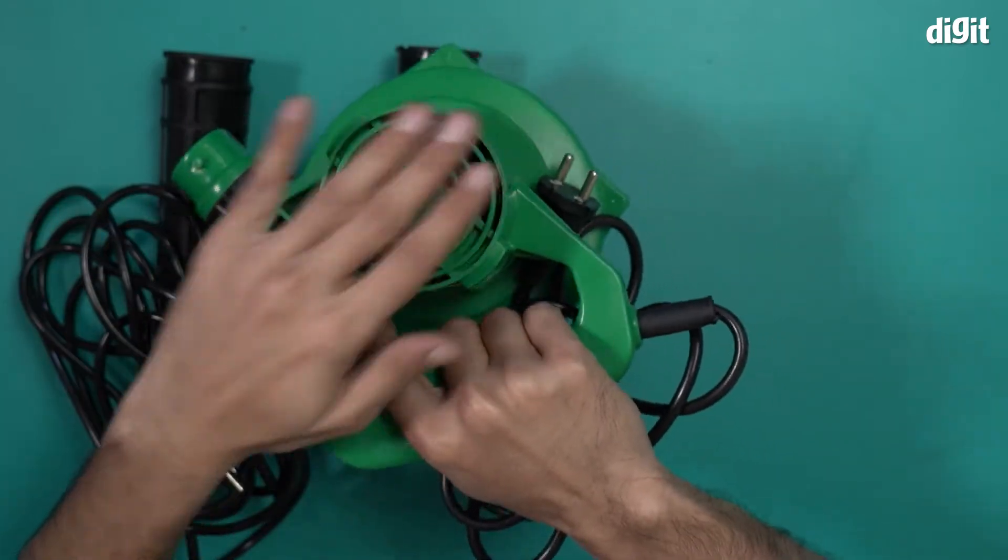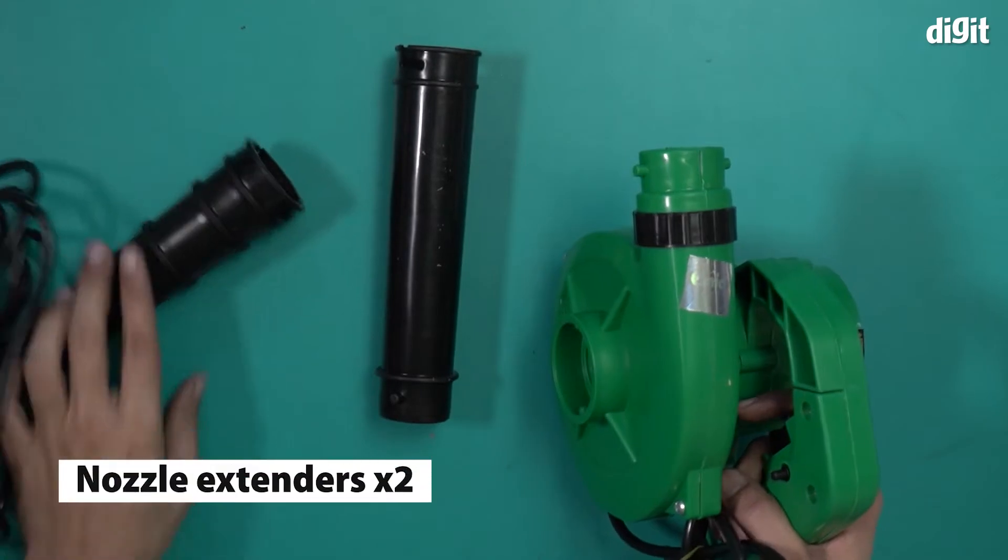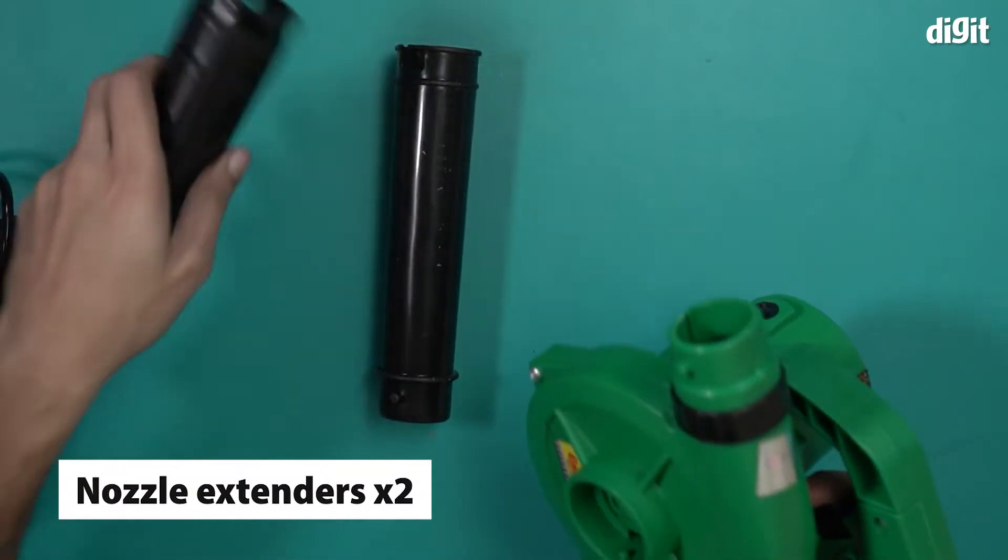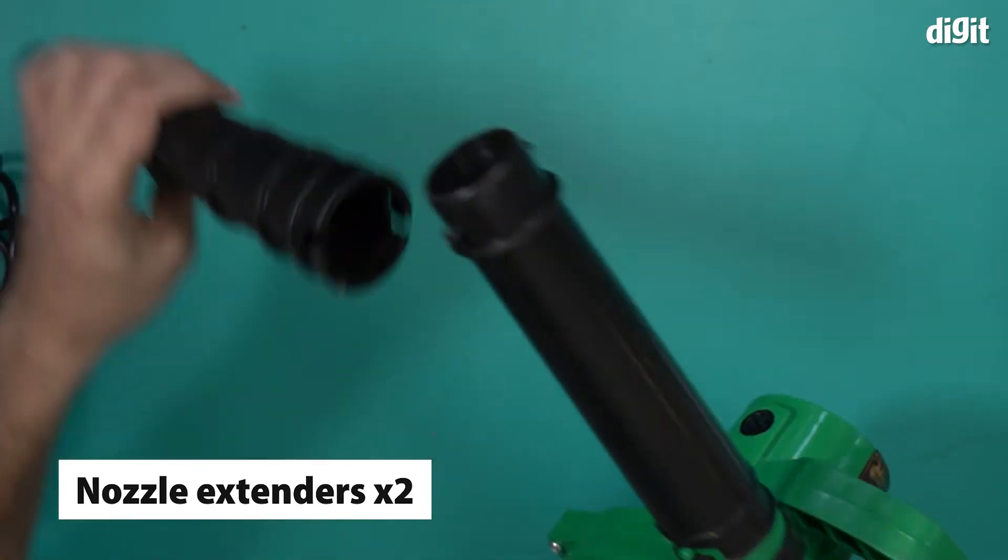Notice that there are fans on this side, and you can see the fan from here as well. These are the two nozzles that come with it. This is a standard nozzle, and you can attach this other nozzle to make it longer or switch it around.